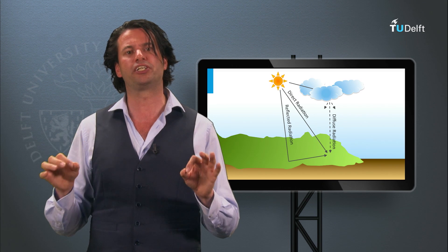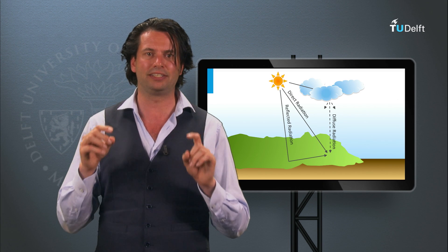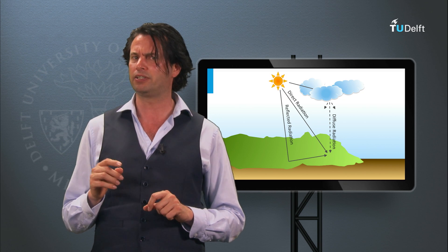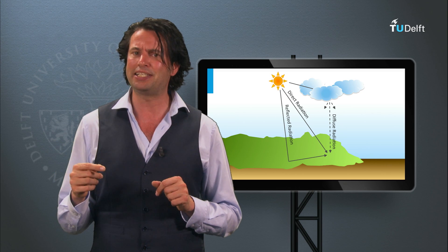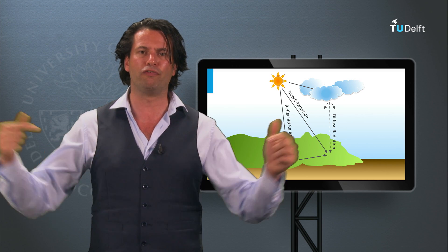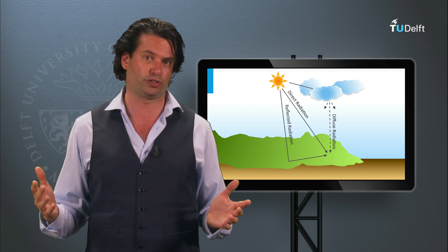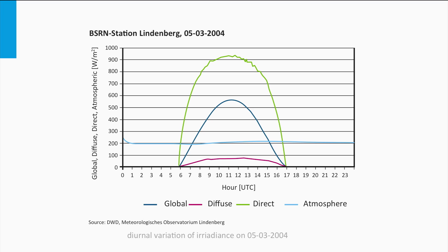Up to now we have only considered the light coming from the sun and directly incident on the Earth's surface. However, as mentioned earlier, 26% of the light is scattered in the atmosphere, meaning light falls on a horizontal surface from various angles. The amount of solar radiation that falls on a horizontal surface is characterized by global horizontal irradiance — the energy that comes from all directions, indicated by the dark blue line. It consists of direct normal radiation from the sun, indicated in green, and the diffuse radiation from the sky, indicated in red.